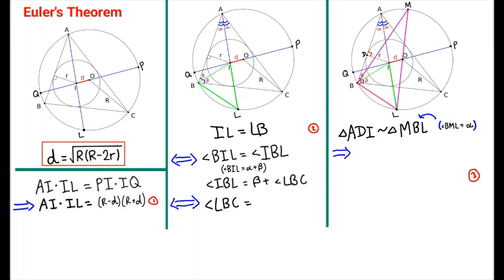Next, let's use isosceles triangles. We need to prove that I-L is equal to L-B. Looking at triangle B-I-L, since it contains both sides, we have to prove that this triangle is isosceles, which means we also need to prove that angle I-B-L is equal to angle B-I-L.